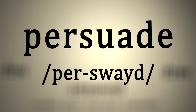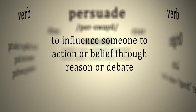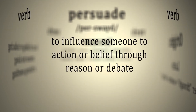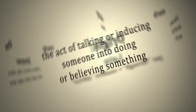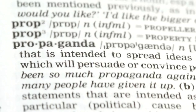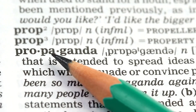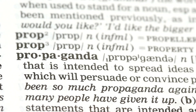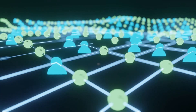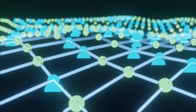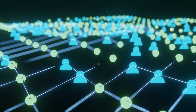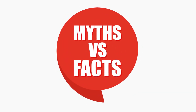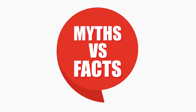Understanding persuasion. Persuasion is like a gentle nudge that encourages someone to think or act in a certain way. It's not about forcing or tricking someone into doing something they don't want to do — that's manipulation. Instead, persuasion involves using communication techniques to appeal to people's emotions, logic, and credibility. Think of it as presenting a compelling argument that makes someone want to agree with you.